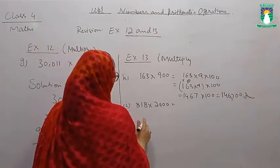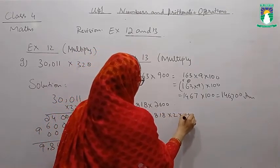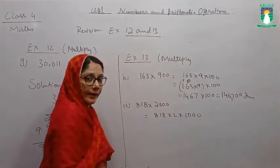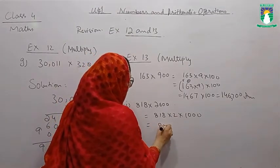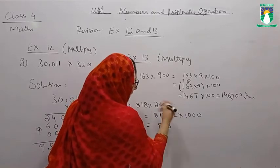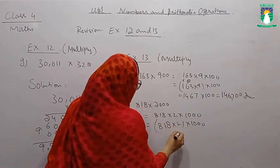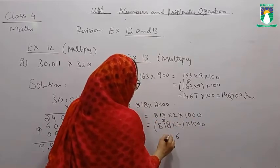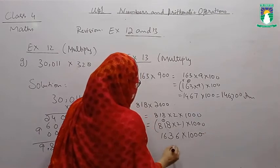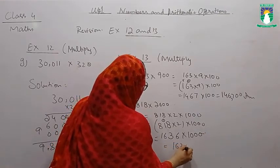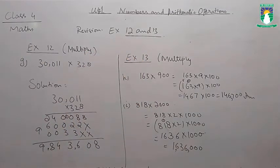Now for the next question we have 818 multiplied by 2000. 818 multiplied by 2 multiplied by 1000. So we have 1,636,000.